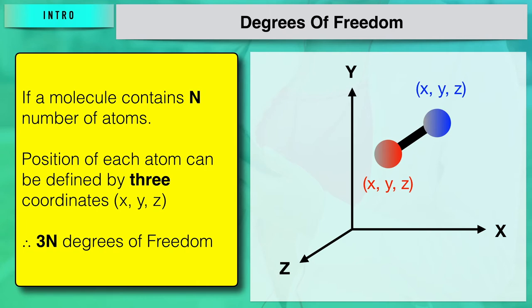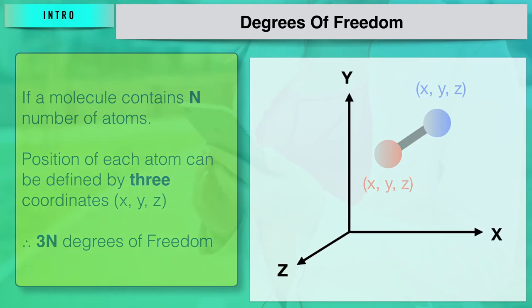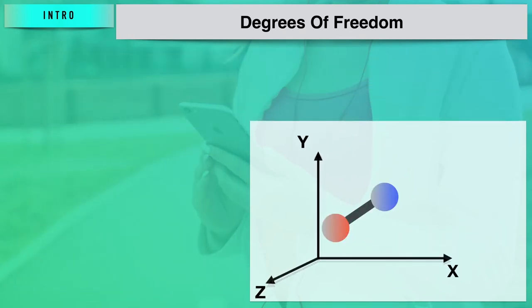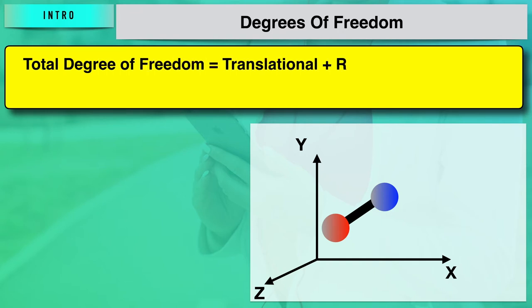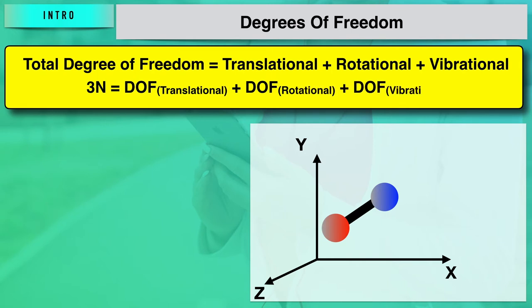Another way to define degrees of freedom in terms of coordinates: the number of coordinates needed to specify the position of all the atoms in a molecule is also termed as degrees of freedom. As far as the kinetic energy of a molecule is concerned, it arises from three motions: translational motion, vibrational motion, and rotational motion. Accordingly, we have three different types of degrees of freedom.